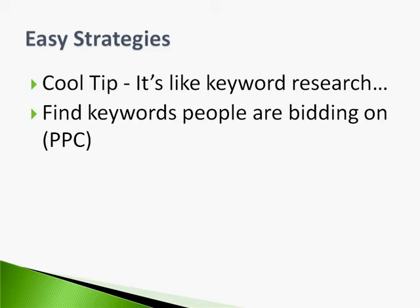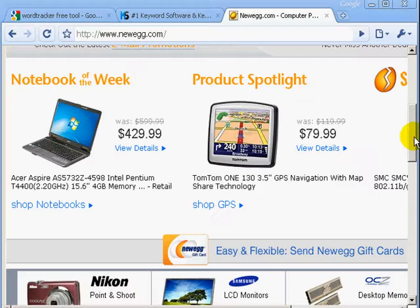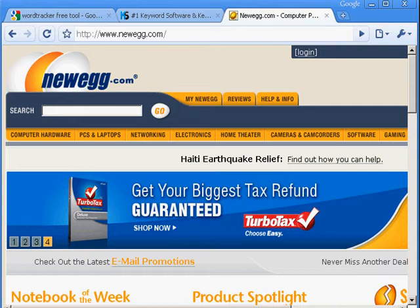Here's the strategy: it's like keyword research. The point is that you're trying to find keywords people are already bidding on — for example in PPC — or keywords that people are searching to buy a specific product or sign up for a specific service. If you can find those keywords, you can turn them into domain names, then check whether those domain names are available. If they are, you've got yourself a gold mine. We're looking for profitable keywords — that's pretty much it.